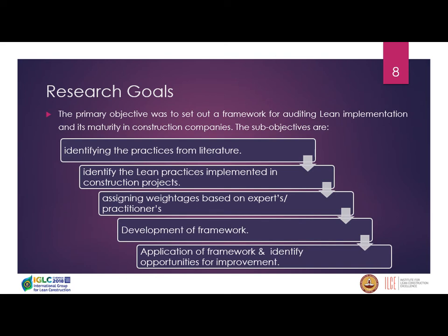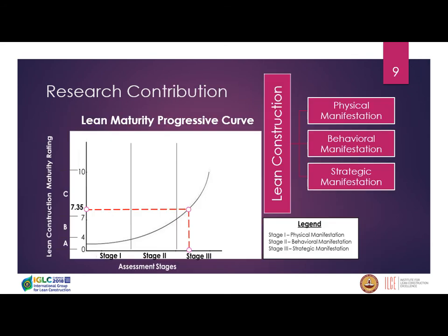Our research contribution divides lean construction into three stages. Stage one is the physical stage, which talks about the implementation of lean as a tool and process. Stage two is the behavioral manifestation, where we talk about lean as a culture. Finally, lean can be taken as a strategy by the top management. These three stages have been plotted on a graph, stage-wise and zone-wise.